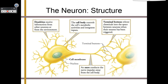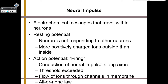Dendrites receive information from other neurons or from the environment — they are the receivers. The cell body controls the cell's metabolic activities and integrates inputs. The axon conducts the nerve impulse away from the cell body — it is the sender. The axon sends the message to the terminal buttons, which release chemicals into the space between neurons when their neuron has been triggered. A neural impulse is an electrochemical message that travels within neurons.